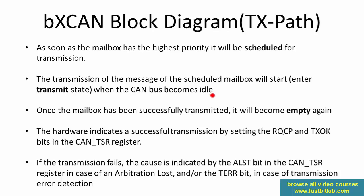Once the mailbox has been successfully transmitted, it will become empty again. The hardware indicates a successful transmission by setting the request complete and TXOK bits in the CAN transmit status register (TSR). If the transmission fails, the cause is indicated by the ALST bit — arbitration lost — in the status register, in case of arbitration loss, or the TERR bit — transmission error — in the case of transmission error detection.